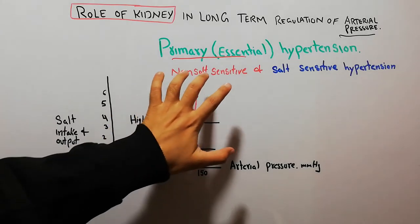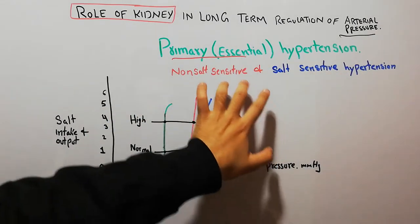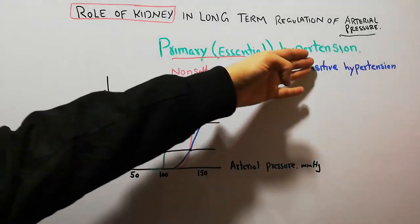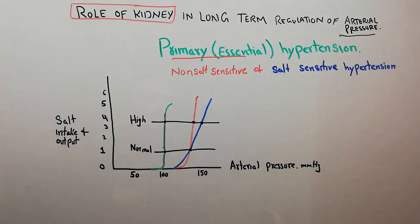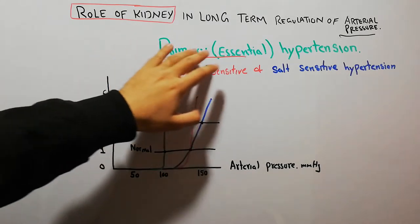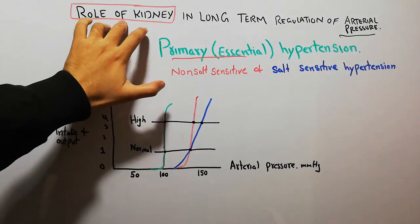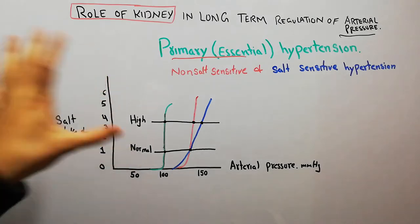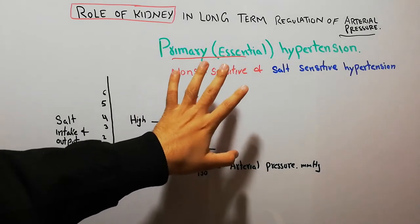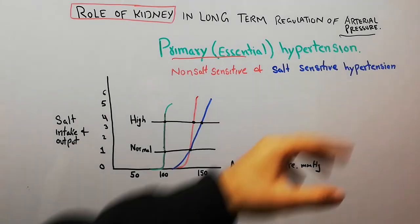Today in this lecture we are going to discuss non-salt-sensitive and salt-sensitive hypertension, both of which are basically types of primary or essential hypertension — hypertension of unknown cause — which we have discussed in detail in the last lecture. We are trying to explain the role of the kidney in primary or essential hypertension and both of its types: non-salt-sensitive and salt-sensitive hypertension.